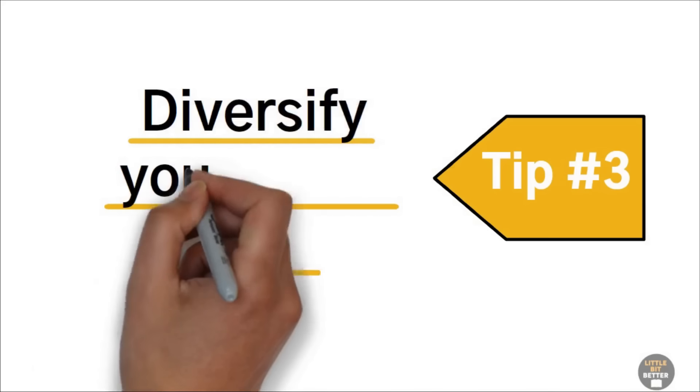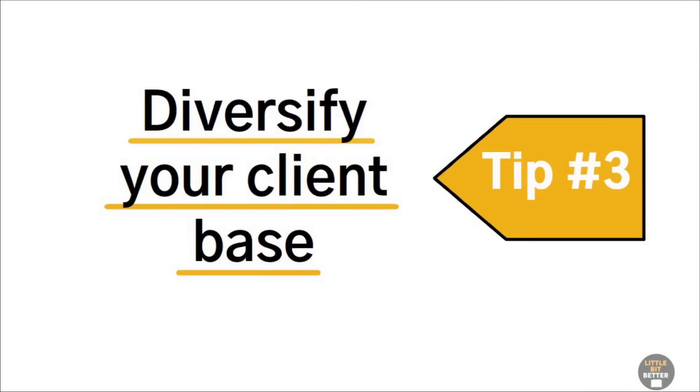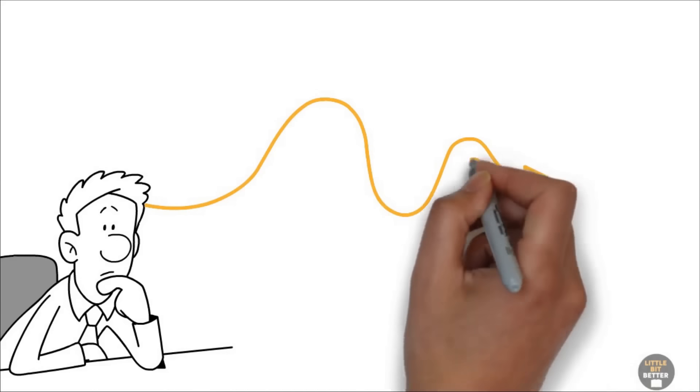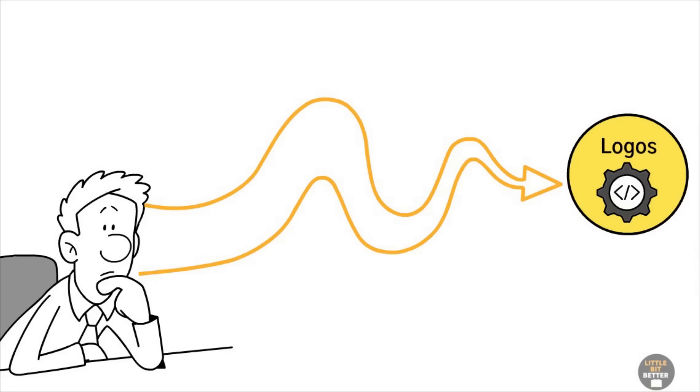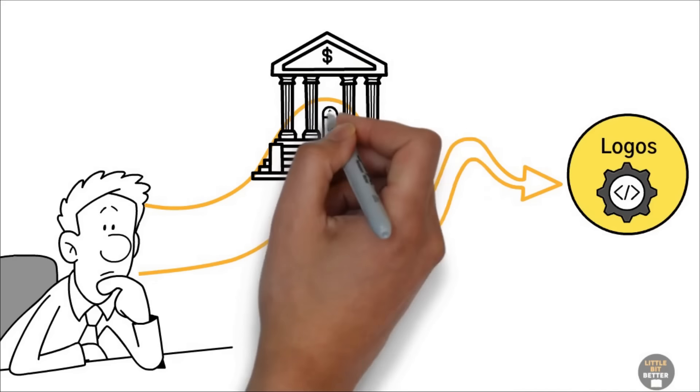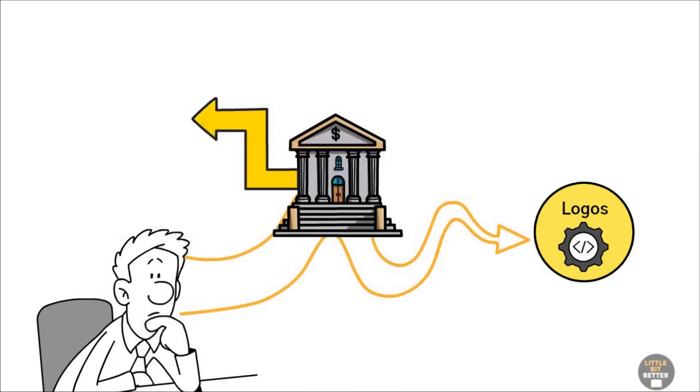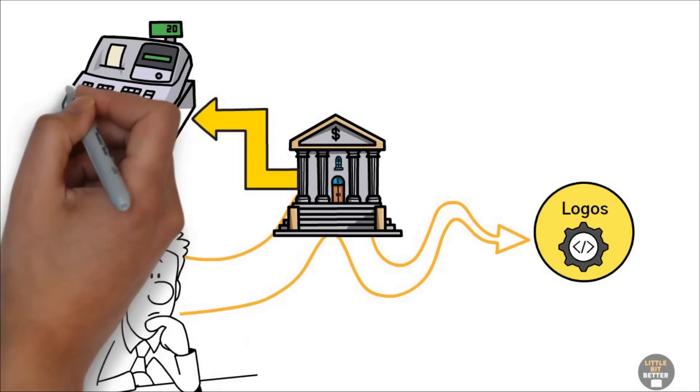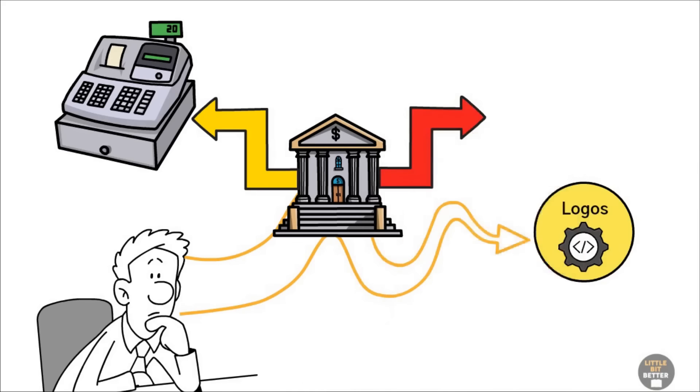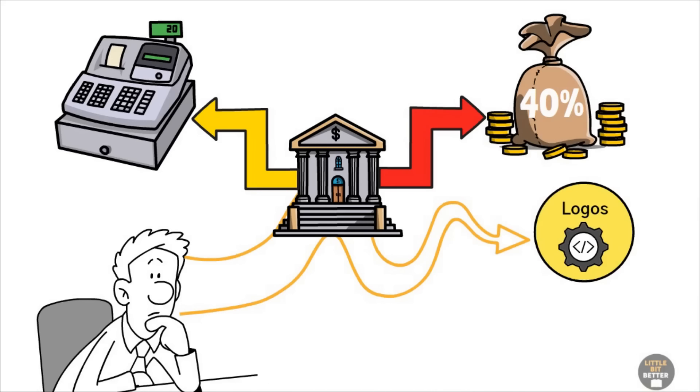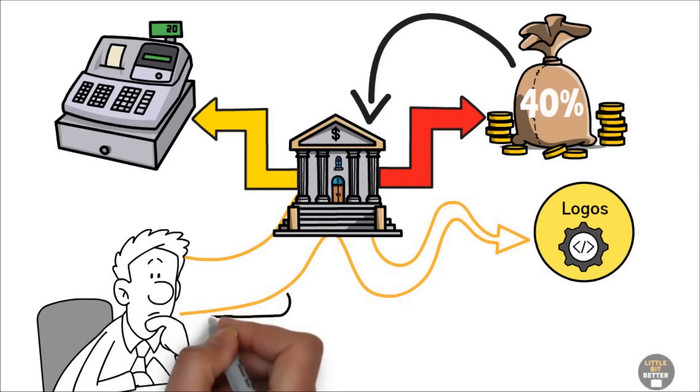Ted's tip number three, diversify your client base. Alex still wasn't convinced. If they did just logos, they'd have to stop working for MNY Bank, his biggest client. Ted explained that relying on MNY would provide cash flow, but it would make it difficult to sell the company. Nobody wants to buy a business where 40% of the revenue comes from one company. It's too risky.